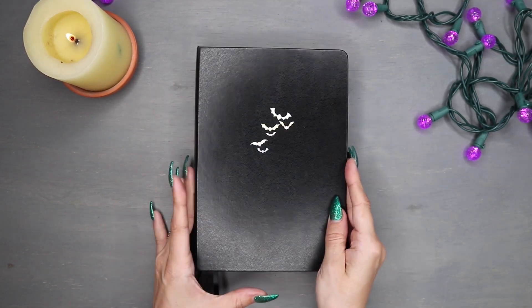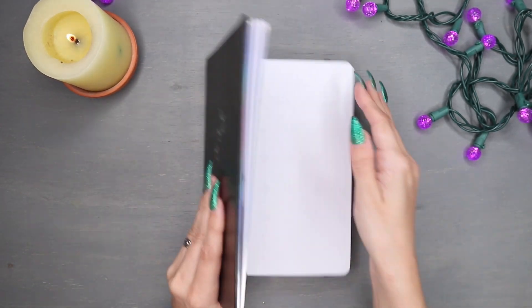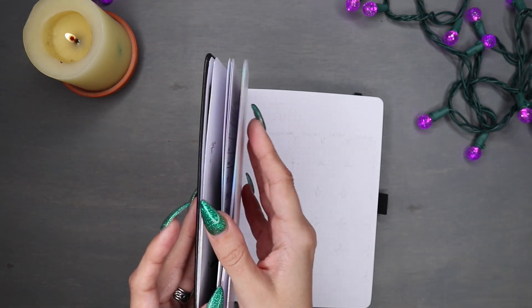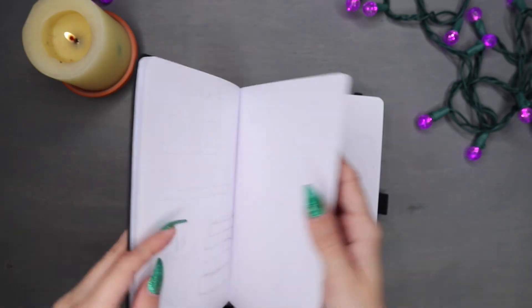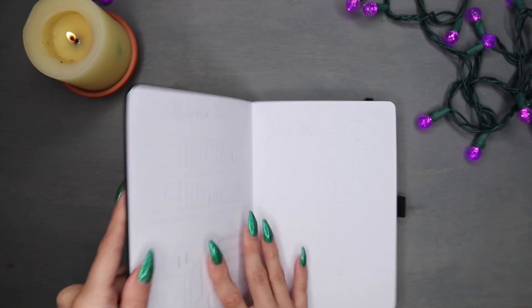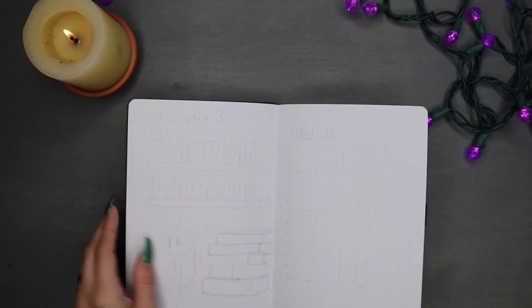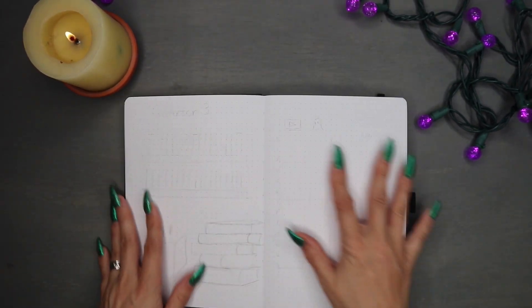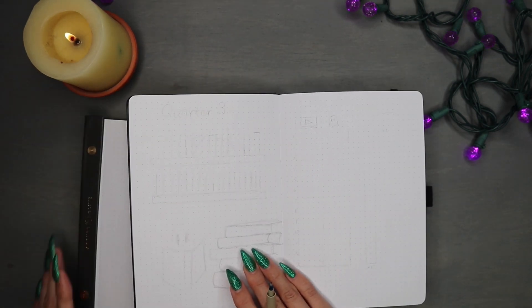Hey boo buddies, Anya here, and it's time for July and Quarter 3 setup. This will be my first quarter and month setup in my new bat bullet journal, or Nana as we've decided to call it.